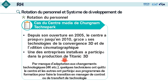Nous avons un mauvais souvenir concernant ce système de rotation — l'exemple du centre média. Le centre était tellement compétent qu'il a été chargé de la production de Titanic 3D. Mais nous ne soutenons plus la production des contenus médias parce que le paradigme industriel et technologique a changé. Certains sont allés au poste administratif et d'autres à la gestion des installations — ce n'était pas un transfert forcé, ils ont participé à des programmes de formation pour faire la transition.